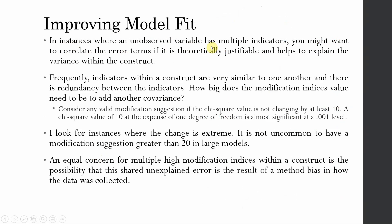In instances where an unobserved variable has multiple indicators, you might want to correlate the error terms if it is theoretically justifiable and helps explain the variance within the construct. Frequently, indicators within a construct are very similar to one another and there is redundancy between the indicators.